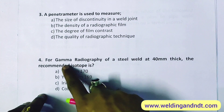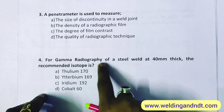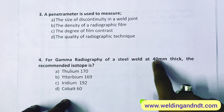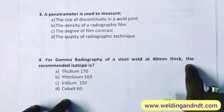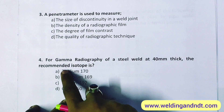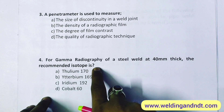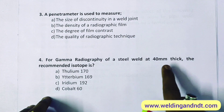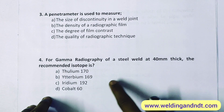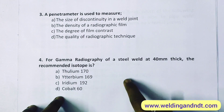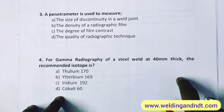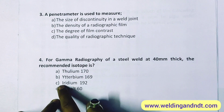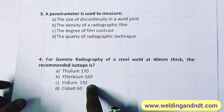Next question: for gamma radiography of a steel weld at 40 mm thickness, the recommended isotope is Iridium-192. I had explained the isotopes and their applicable thickness ranges in the video lecture series.